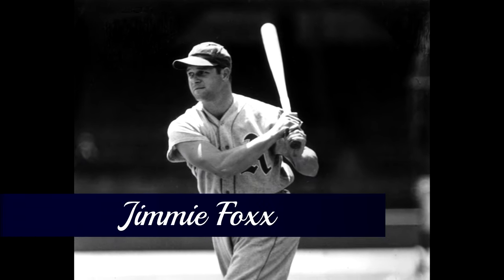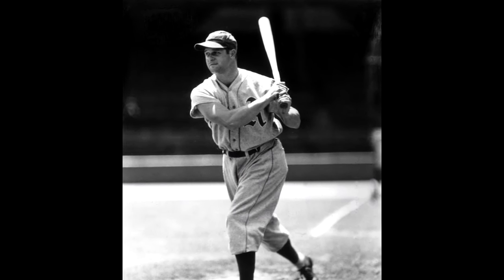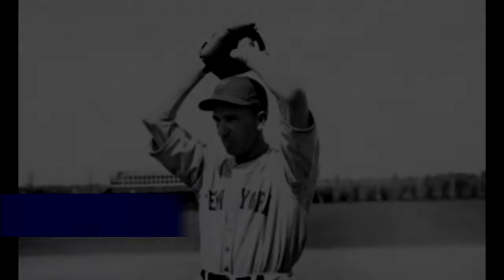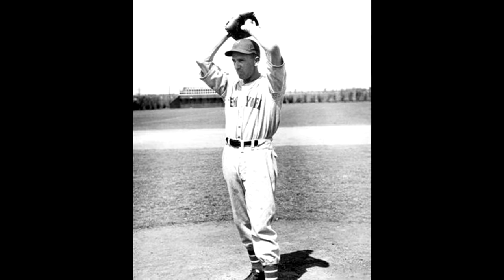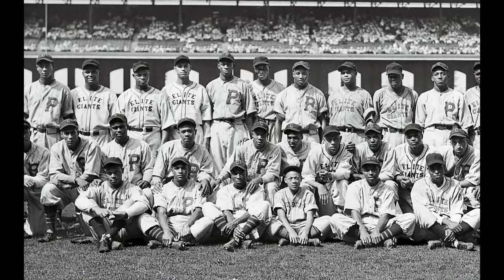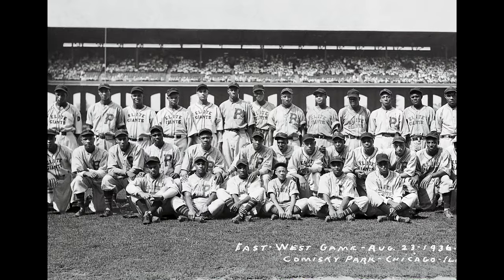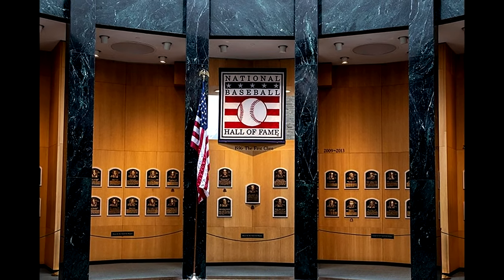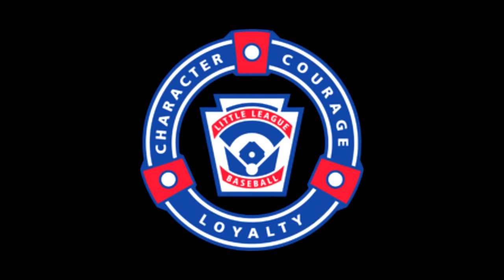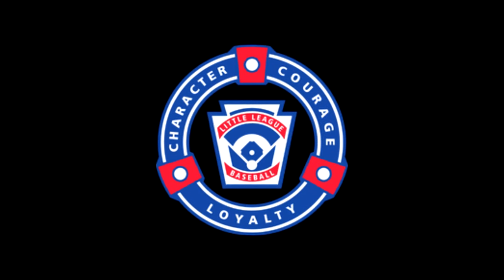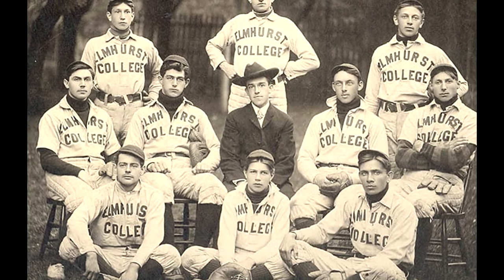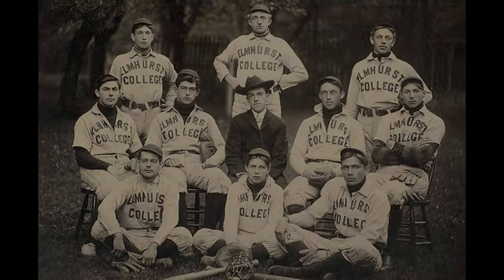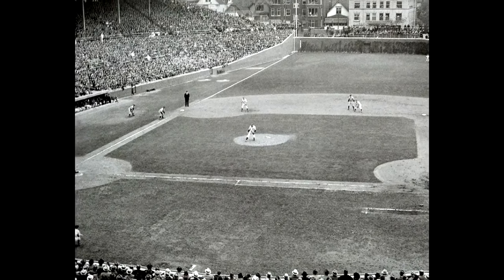Major league teams would start investing in minor league teams, helping to develop the first farm system, where players would play for minor league teams in hopes that they would develop their skills and be called up to play for the major league teams. New Negro Leagues — the Negro National League and the Negro American League — would form. Baseball established the National Baseball Hall of Fame in Cooperstown, New York. Little league baseball would be established, and college baseball would become formalized under the National Collegiate Athletic Association, or NCAA. Baseball became immensely popular.